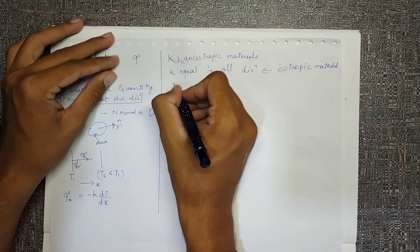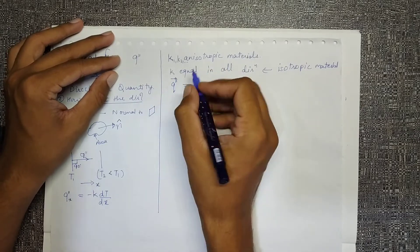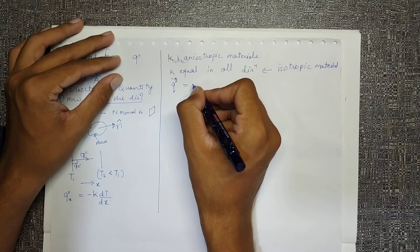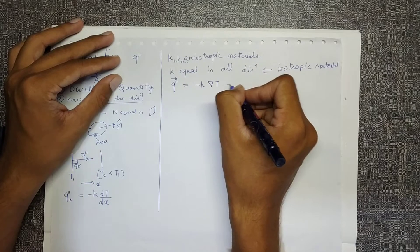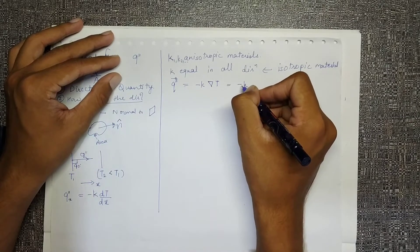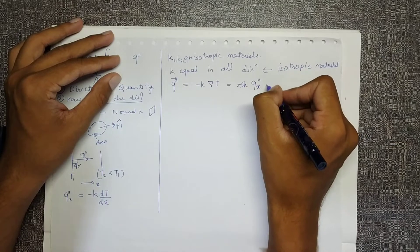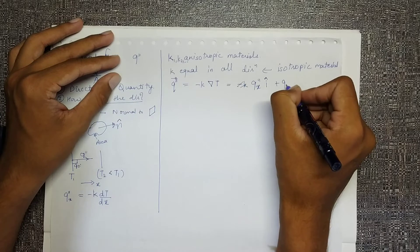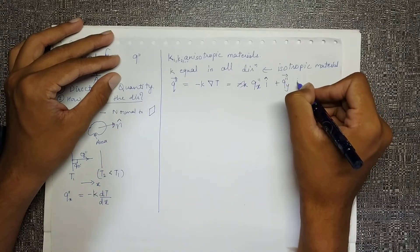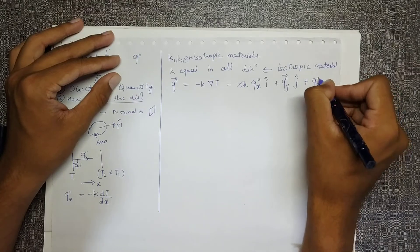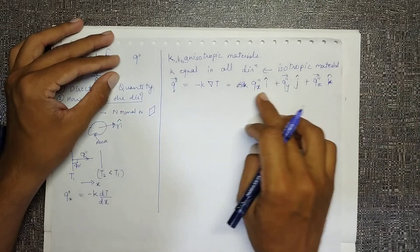When we write the heat flux in different directions, that is if this is my total heat flux, it will include multiple components which represents like this: qx double dash i cap plus qy direction j cap plus qz direction k cap. These are the three addition of three perpendicular heat flux to give a net heat flux.